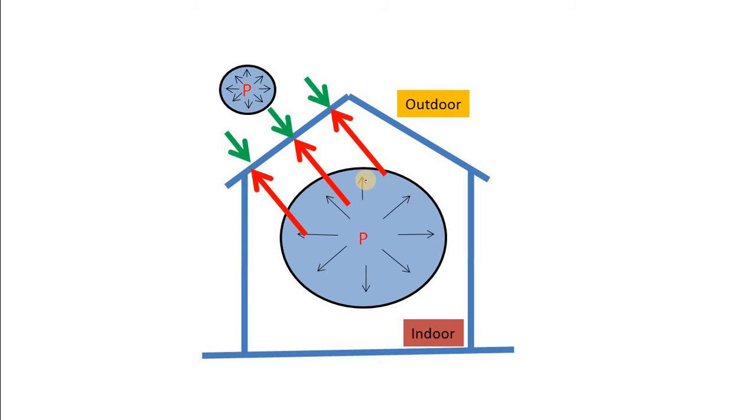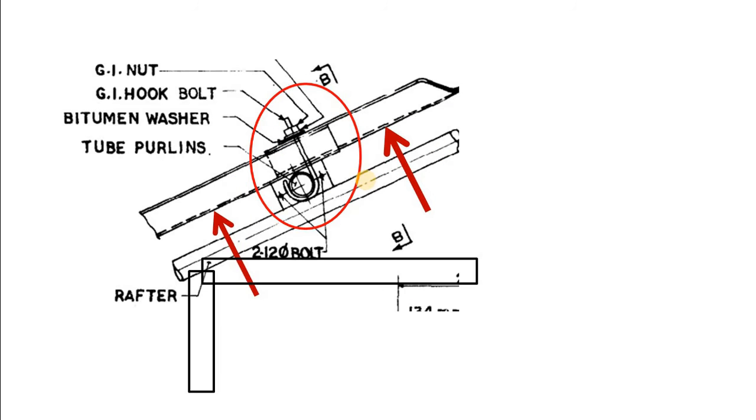Naturally, the resultant force is acting from inside to outside. So, during strong wind or cyclone, if the sheet is not connected properly, it is simply blown away by the force as shown here.